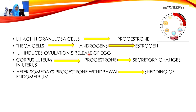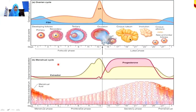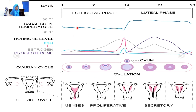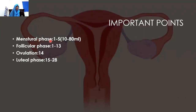Key points: LH induces ovulation and release of the egg. The corpus luteum produces progesterone and estrogen, bringing secretory changes in the uterus. When the unfertilized ovum is identified, progesterone and estrogen withdrawal leads to shedding of the endometrium. The menstrual phase runs from day 1 to day 5, with approximately 10 to 18 ml of blood lost. The follicular phase is from day 1 to day 13, ovulation on day 14, and the luteal phase from day 15 to day 28.